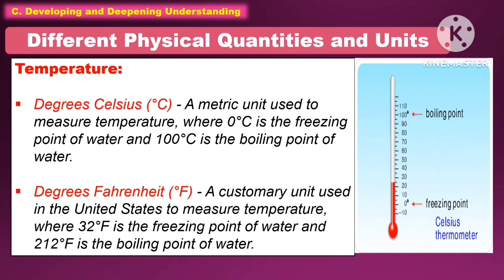Another physical quantity is temperature. For units, we use degrees Celsius and degrees Fahrenheit. Degrees Celsius is a metric unit where 0°C is the freezing point of water and 100°C is the boiling point of water. Degrees Fahrenheit is a customary unit used in the United States where 32°F is the freezing point of water and 212°F is the boiling point of water.